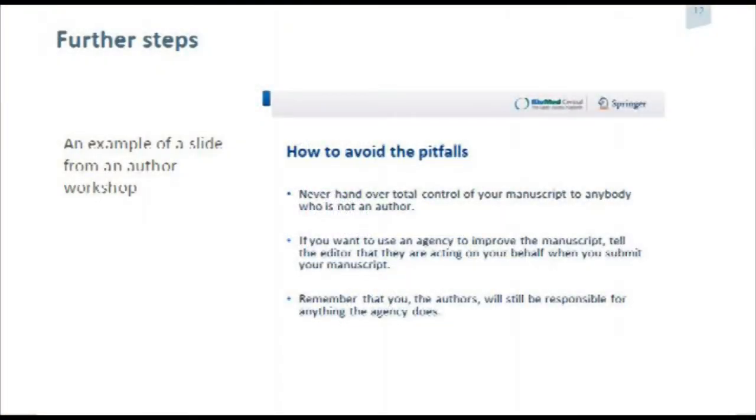We raised awareness amongst our external editors and blogged about this, talking to people so that junior researchers and funders were aware. We also thought about what we can do proactively — rather than reactively waiting for a problem, in our audits of our journals we've started to look for this problem and address patterns. This is an example of a slide from one of our author workshops: it's really important that authors never hand over total control of a manuscript to anybody who's not an author. If they want to use an agency, either make it clear they're acting on your behalf, or ideally take back control and submit the manuscript yourself.